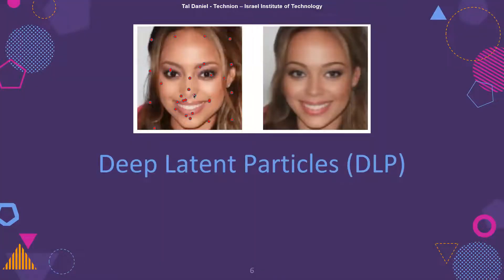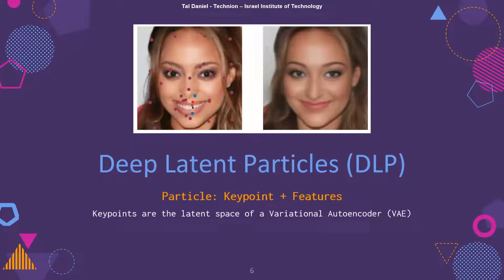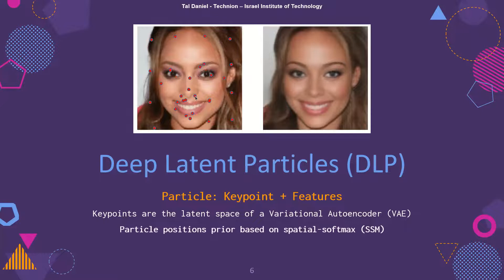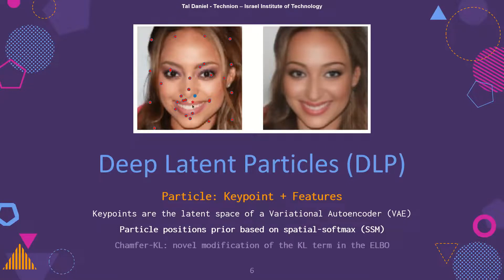We present Deep Latent Particles, or DLP, a new representation of visual data that disentangles object positions from appearance. DLP decomposes the input into low-dimensional latent particles, where each particle is described by its spatial location and features of its surrounding region. We follow a VAE-based approach and introduce a spatial prior for the particle position based on a spatial softmax architecture.